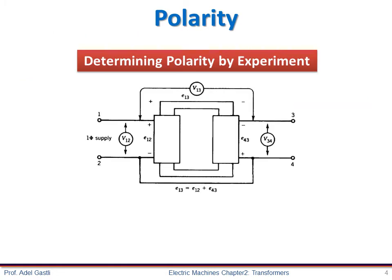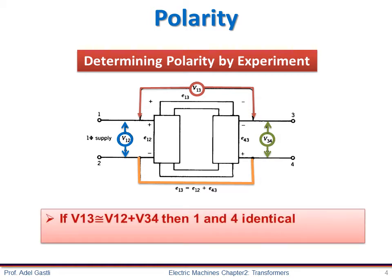Polarity can be determined by experiments, as shown in this figure. We connect three voltmeters as shown: one measuring the input voltage between terminals 1 and 2, the second between terminals 1 and 3, and the third between terminals 3 and 4. Terminals 2 and 4 are electrically connected with a conducting wire. Then, if V13 is nearly equal to V12 plus V34, we can say that terminals 1 and 4 have identical polarity.